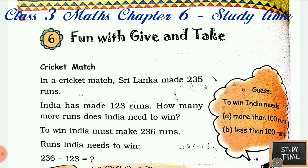Hello everyone, welcome to study time. In this video we are going to see Class 3 Maths, Chapter 6: Fun with Give and Take. In a cricket match, Sri Lanka made 235 runs and India has made 123 runs.